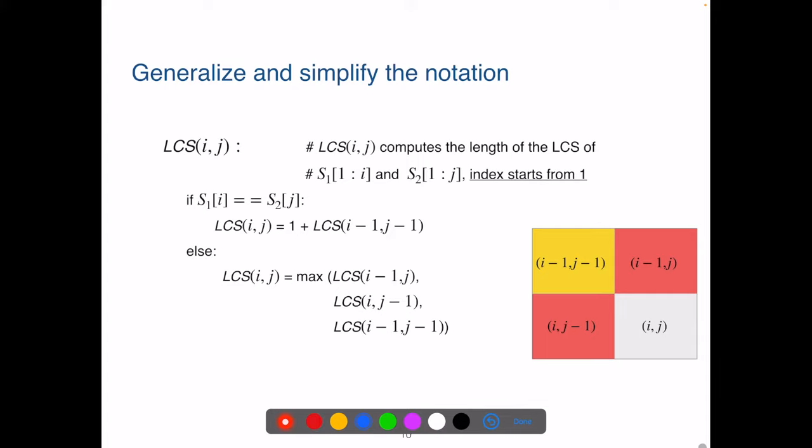Algorithm LCS computes the length of the LCS of two sequences. We assume index starts from one. First, we look at the ith letter of S1 and the jth letter of S2, that is the last letters from both sequences. If they are identical, we reduce the problem to LCS(i-1, j-1), and plus one. Else, we compute three subproblems and pick the maximum result.